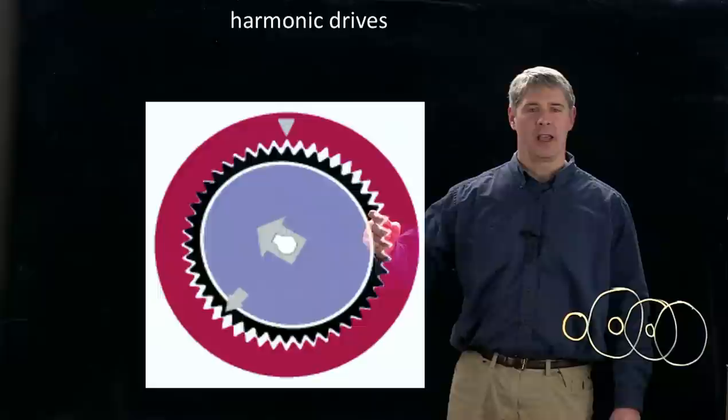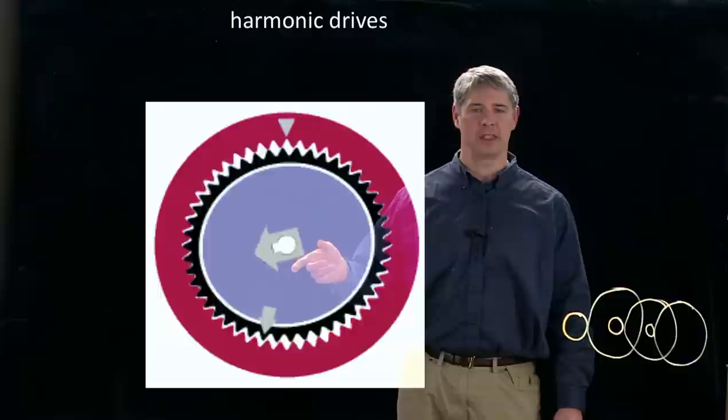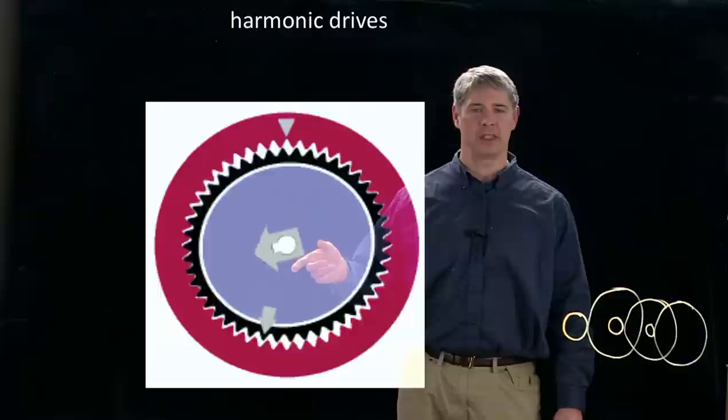And that flexible spline moves around and makes contact with this rigid internal gear. And as it does that, it rotates very slowly. So you can see for every rotation of this input elliptical wave generator, the output denoted by this arrow is moving very slowly. So with a harmonic drive, you can get a big gear reduction in just a single stage, sometimes up to 50 or 100 to 1 gear reduction.